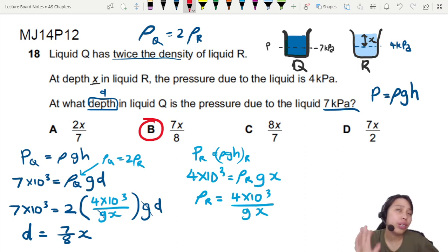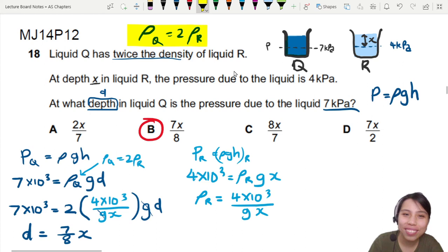So whenever there's pressure related ratio, you stay calm. Just write your rho GH for either thing. And see how you can link both of them. In our case, the ratio of density was the link between both containers of liquids. So that's all for this video. I'll see you in the next one.